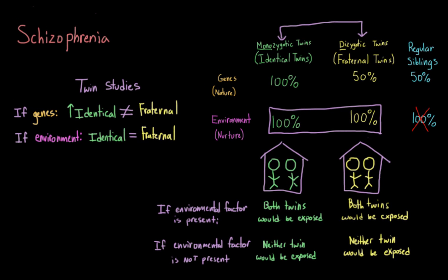To review: if identical twins, who share 100% of the same genetic material, resemble each other more than fraternal twins, who share 50%, then we would conclude that the trait, disorder, or behavior has a strong genetic component. However, there are problems with twin studies. For example, identical twins may be treated more similarly than fraternal twins, which could have an unexpected effect — meaning identical twins might actually share even more of their environment than fraternal twins do.